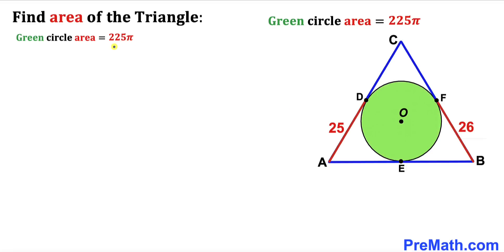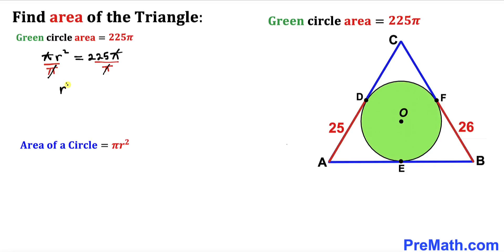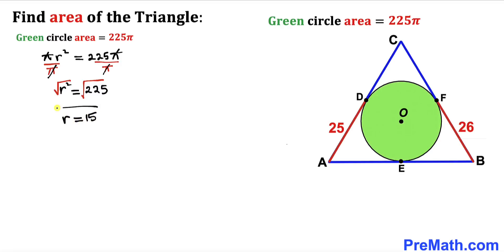Our very first step: we've been given the circle area as 225π, and now we calculate the radius. Recalling the area formula: Area = πr². Setting πr² = 225π, we divide both sides by π, giving r² = 225. Taking the square root on both sides, our radius r equals 15 units.